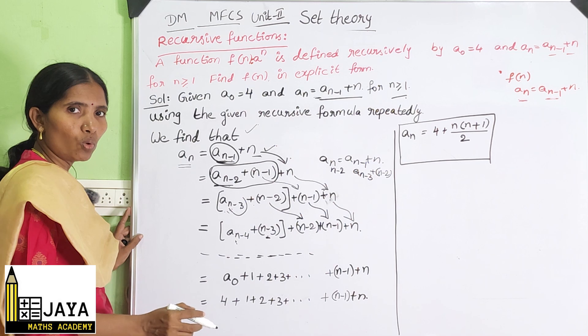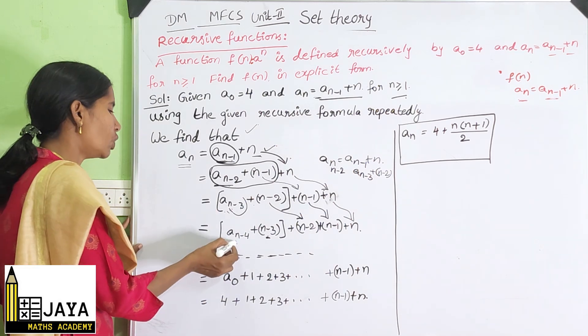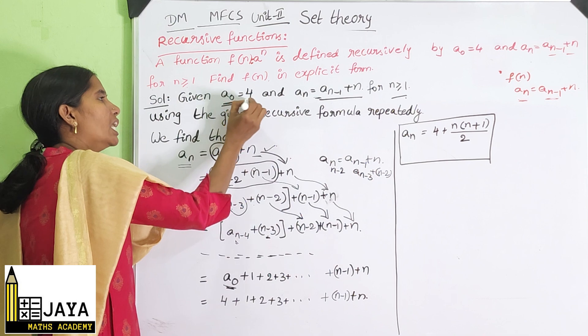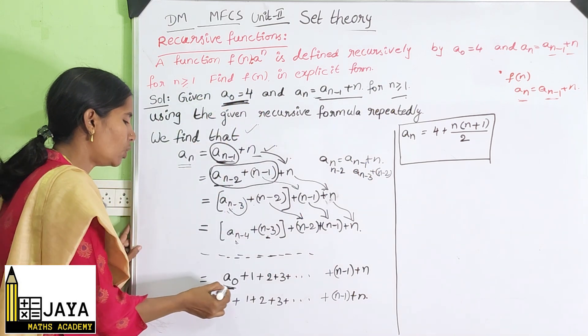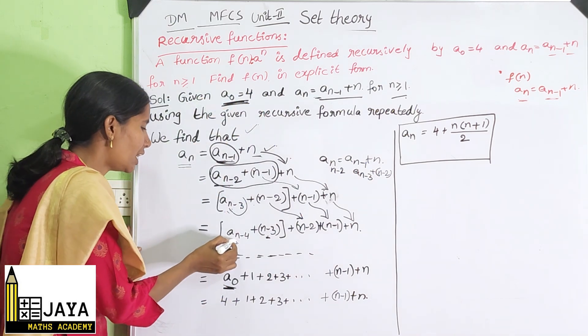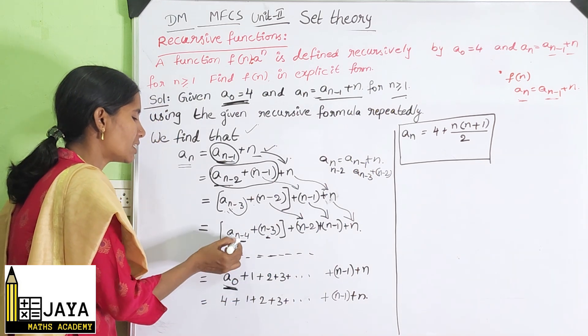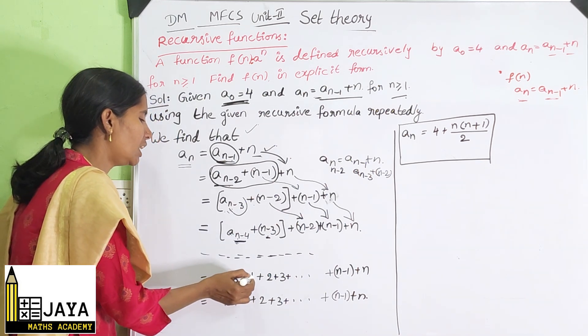Continuously if we do, we get here A(1) up to A(0). Why? Because we have the value A(0). So up to A(0) you write. So here, instead of n-4, substitute 0. So A(0) plus here, when you put 0 here, 1 will come.